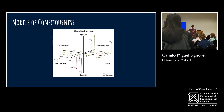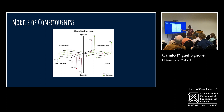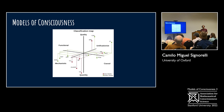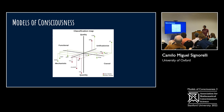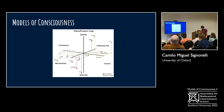The next step we wanted to do is a classification map. I don't have time to explain in detail all the different dimensions we use to classify models of consciousness, but I'll give you the picture. We were trying to classify models depending on the target of explanation: whether they explained quality or quantity, whether they used functional or causal assumptions, whether the structure was more specific, or whether they assumed a mechanistic or unificationist type of explanation. You can see how just with these three dimensions there is already a huge spectrum of possibilities.